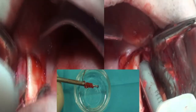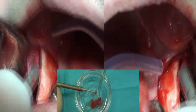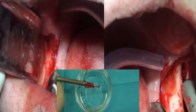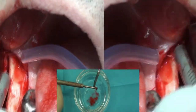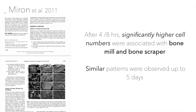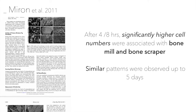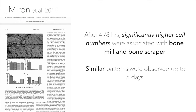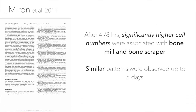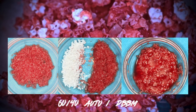We then collect autologous bone from the mandibular ramus using a bone scraper, using a single surgical site as both donor and recipient site. As described by Richard Myron, bone scrapers and bone mills result in significantly higher cell numbers after 4 and 8 hours compared to other techniques. The collected autologous bone is mixed at 60% autologous bone and 40% Bio-Oss in large particle size (2g Bio-Oss), because small particles would escape through the membrane holes.